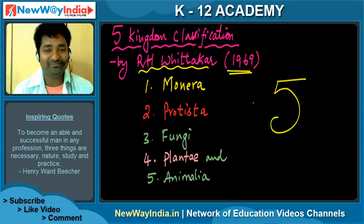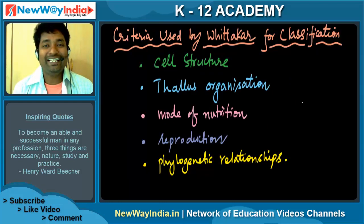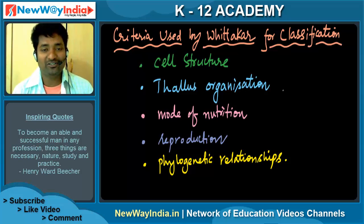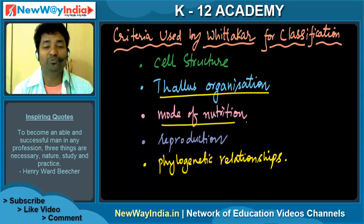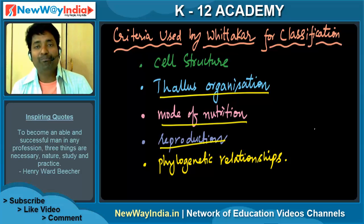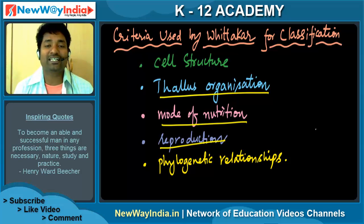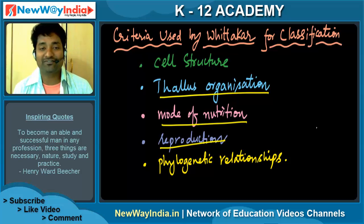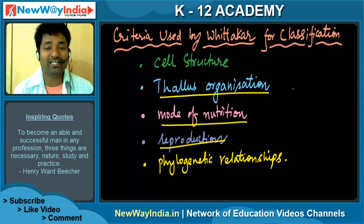On what basis did Whittaker divide those kingdoms? The criteria used by Whittaker for classification are: first, cell structure; second, thallus organization; third, mode of nutrition; fourth, reproduction; and fifth, phylogenetic relationships. You may get a question asking you to list these five criteria, so remember them well.